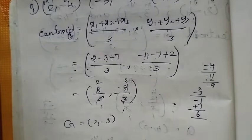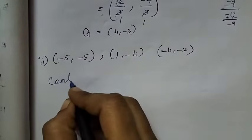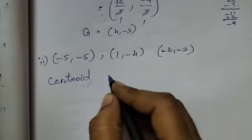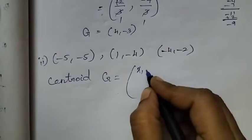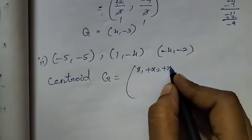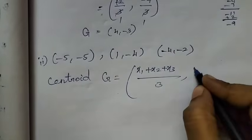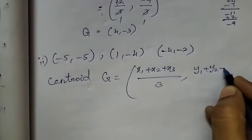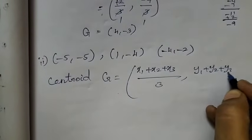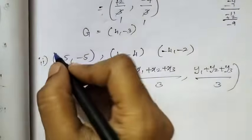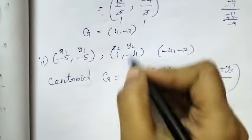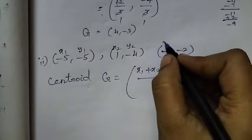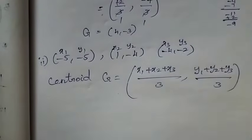Next is the second subdivision. In some case we will find the centroid. G is equal to the formula: x1 plus x2 plus x3 by 3, y1 plus y2 plus y3 by 3. So this is x1, y1; x2, y2; x3, y3.